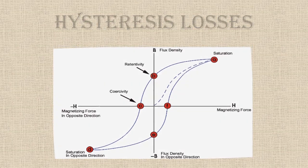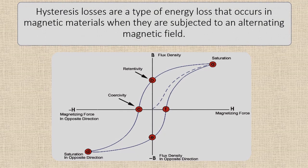Hysteresis losses are a type of energy loss that occurs in magnetic materials when they are subjected to an alternating magnetic field.